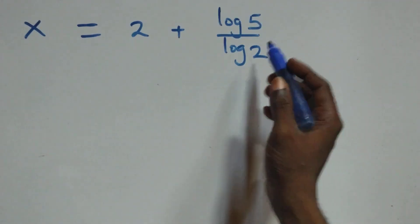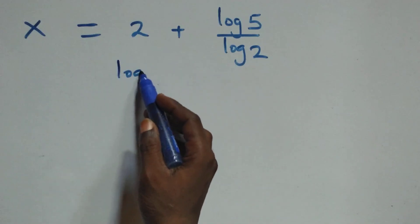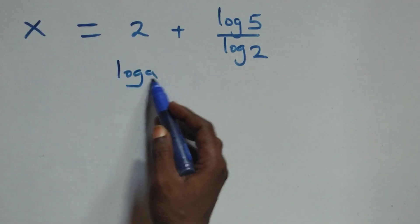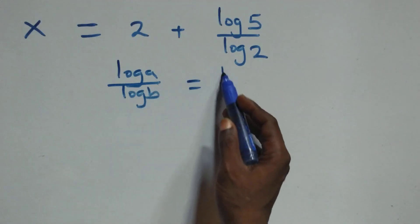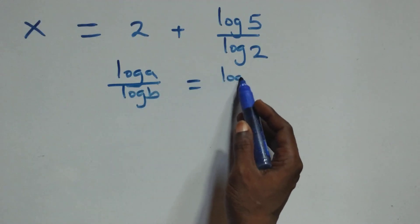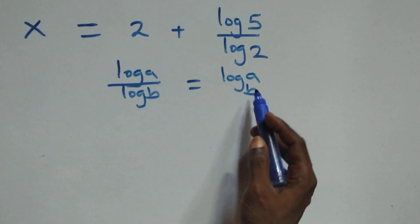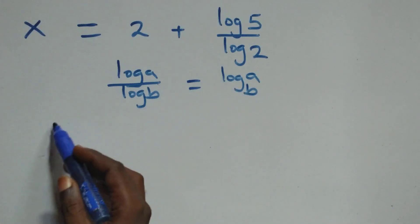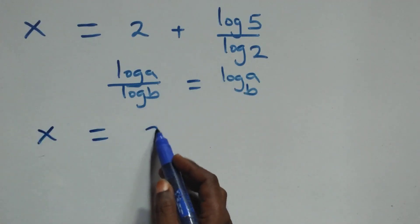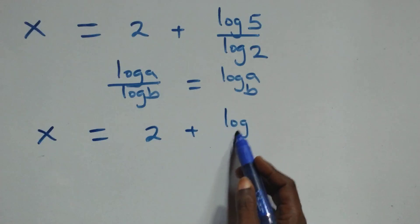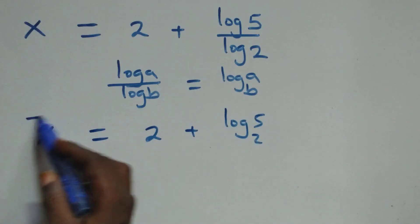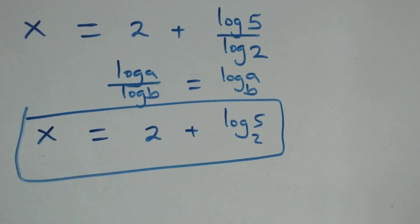Next step here, we apply the change of base rule. When we have log A over log B, this is the same thing as log A to base B. Therefore, x equals to 2 plus log 5 base 2. That is the value of x: x equals to 2 plus log 5 base 2.